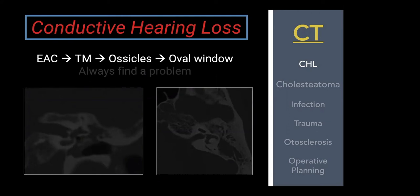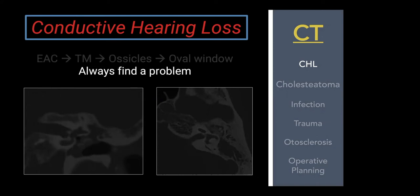For conductive hearing loss, we typically use CT. As you know, conductive hearing loss involves something physically wrong in the chain of conduction from the EAC and tympanic membrane to the ossicles and oval window — something mechanically wrong. Since it's all bones and air, CT is a really good way to evaluate this. We should almost always find a problem. I tell my trainees: if you have a CT for conductive hearing loss and see no abnormality, go take a walk, come back, and look again. You shouldn't feel comfortable with a negative CT temporal bone for that indication.